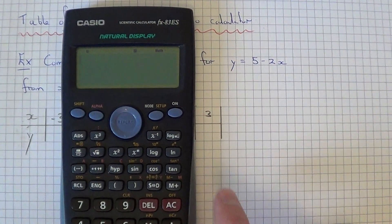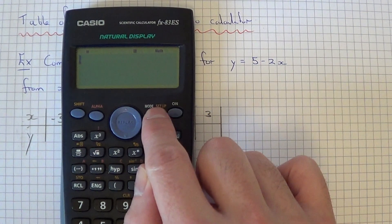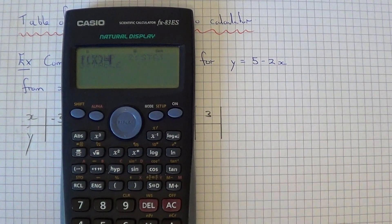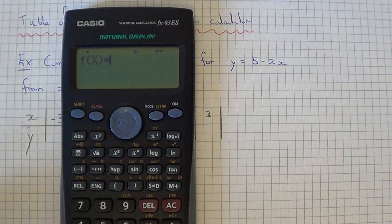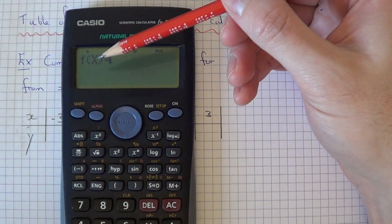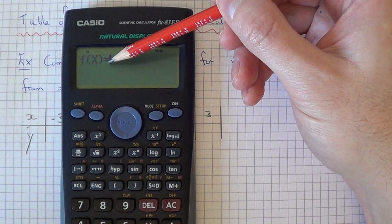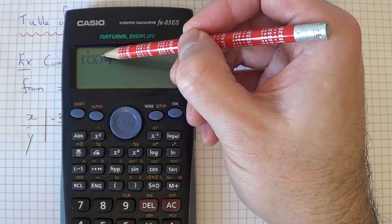To get your table of values up we're going to press mode and number 3 for table. As you can see we've now got this f bracket x come up. Now f of x is actually the same as y.